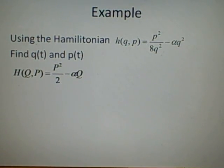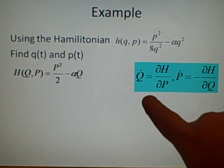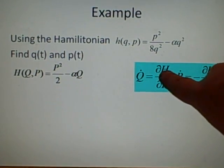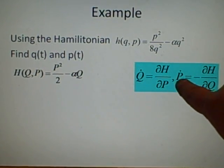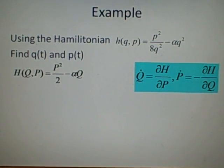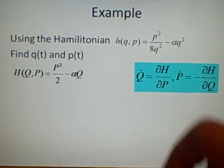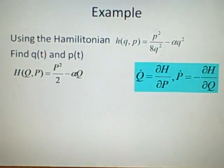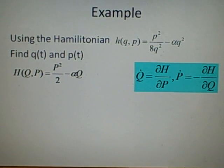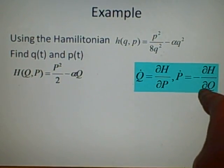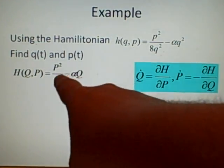Next thing we want to do is use the equations here, which is Q dot equals dH/dP, and P dot is minus dH/dQ. So if we work them out, Q dot will be equal to P, because the two will cancel and there's no p's there, and P dot will be equal to minus, we want to get the Q's, which will be another minus, so it'll just be alpha.